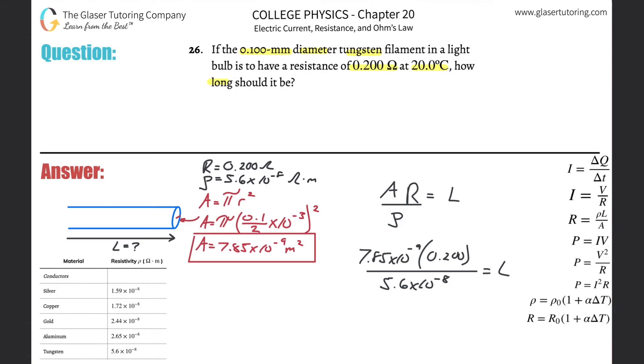And what do we get? Let's plug it in. I'm going to use the exact value of the cross-sectional area I found, just so you know. So multiply that by 0.2, then divide that by 5.6 times 10 to the minus 8. And what do we get?